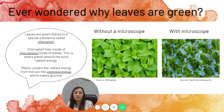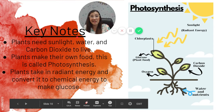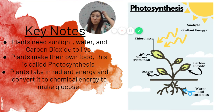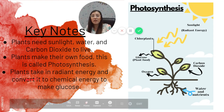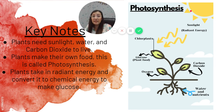This last page has a poster and three important highlights. First, plants need sunlight, water, and carbon dioxide to live. Second, the process of photosynthesis is where plants make their own food. Third, plants take in radiant energy from the sun and convert it into chemical energy to make their plant food called glucose. The sun provides radiant energy, which is absorbed by the green chloroplasts in plant leaves.